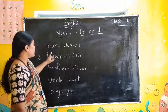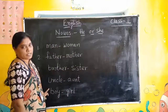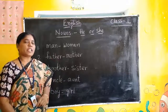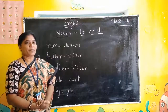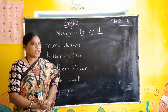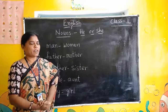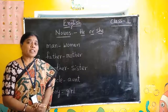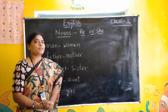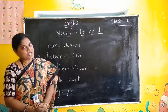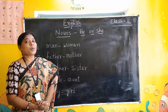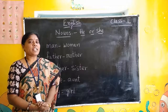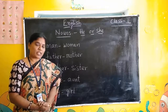Now I have given some words on the board. You also observe your surroundings. Your uncle is he, your aunt is she. Your brother is he, your sister is she, your grandmother is she, your grandfather is he.